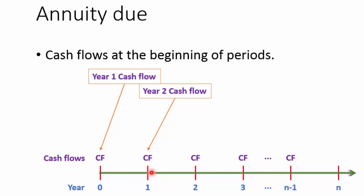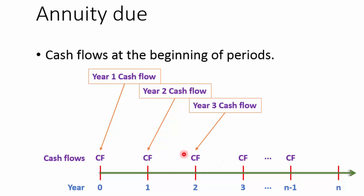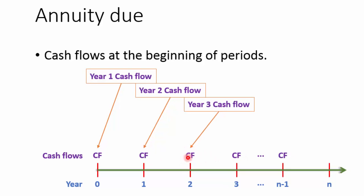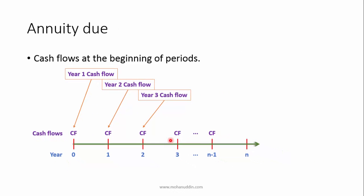Sometimes people become confused — they think that the cash flow at point 1 is the year 1 cash flow, but in case of annuity due it is actually the year 2 cash flow. And year 3 cash flow is generated at point 2, that means at the beginning of year 3.